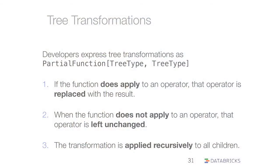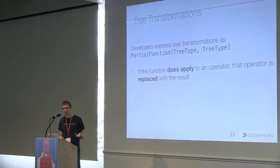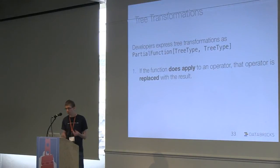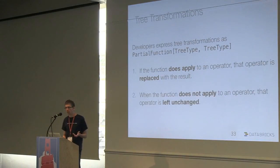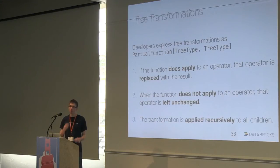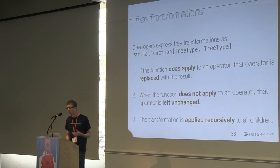To express a rule in the Catalyst optimizer, you give it a partial function from a tree node to another tree. We look at each operator in the tree; if the partial function applies — it has a pattern matching what we have in that operator — we run it and replace it with the result. If it doesn't apply, we just don't change it. If we have a bigger tree, we apply this recursively at each operator until we run out of places where we can use this rule.